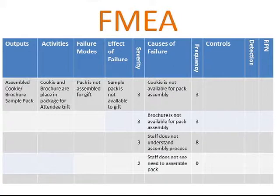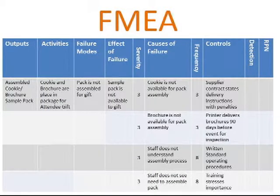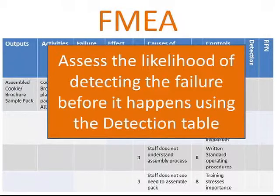From here, the exhibitor identifies the process controls — these are the current steps in place to avert the failure from occurring. At this point, the final rating evaluation is done by assessing the ability of the system to detect the failure prior to it occurring. To complete the FMEA, the RPN, or risk priority number, is calculated by multiplying the severity times the frequency times the detection.